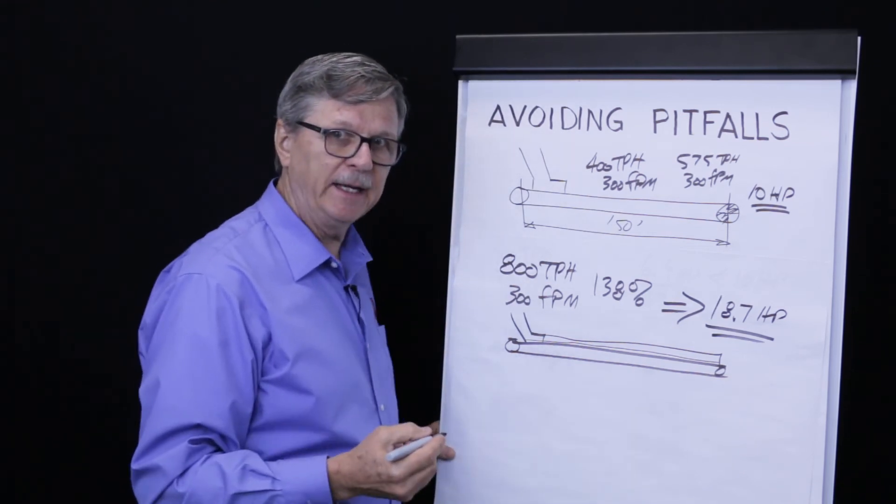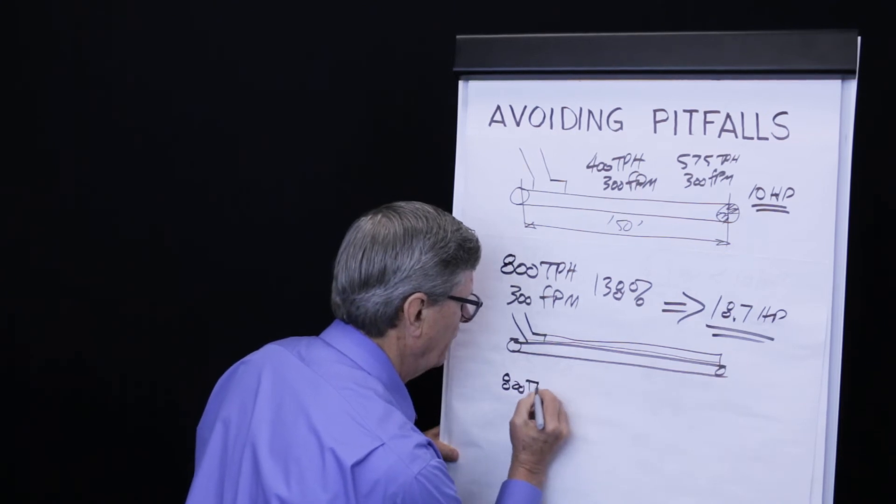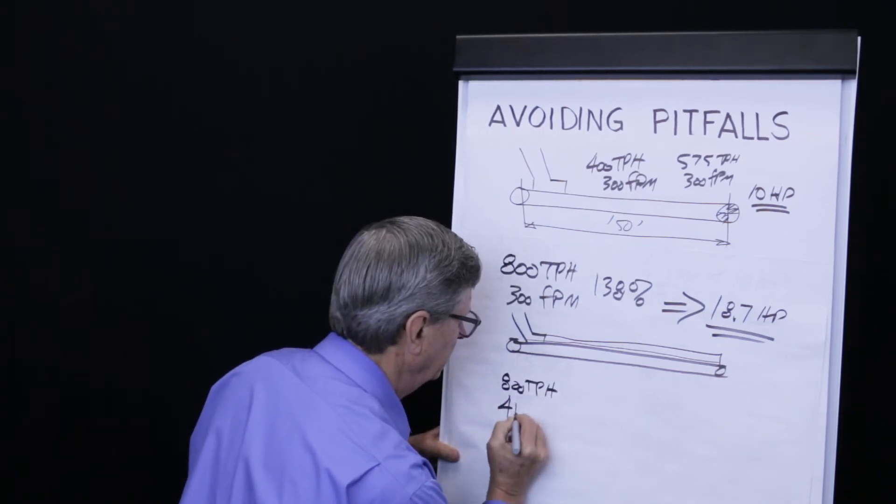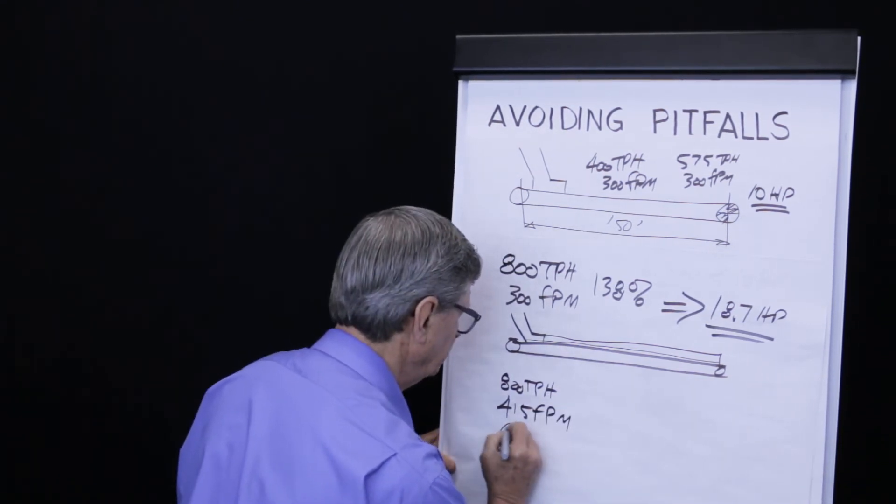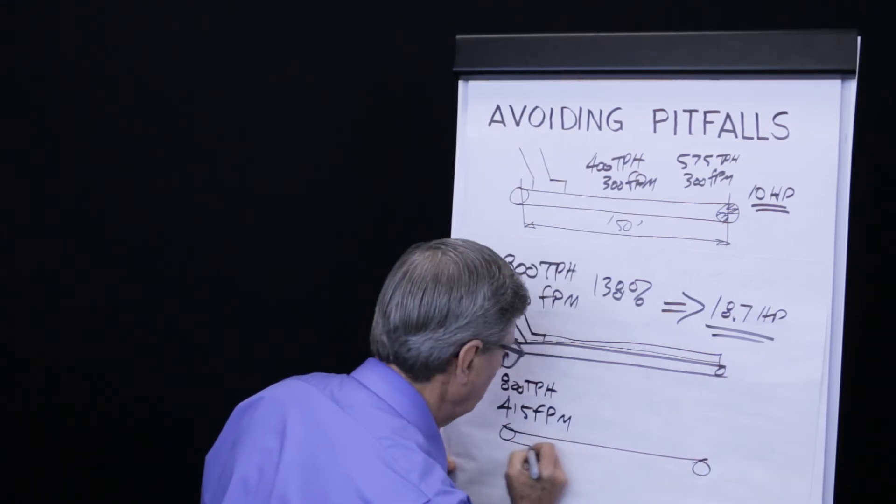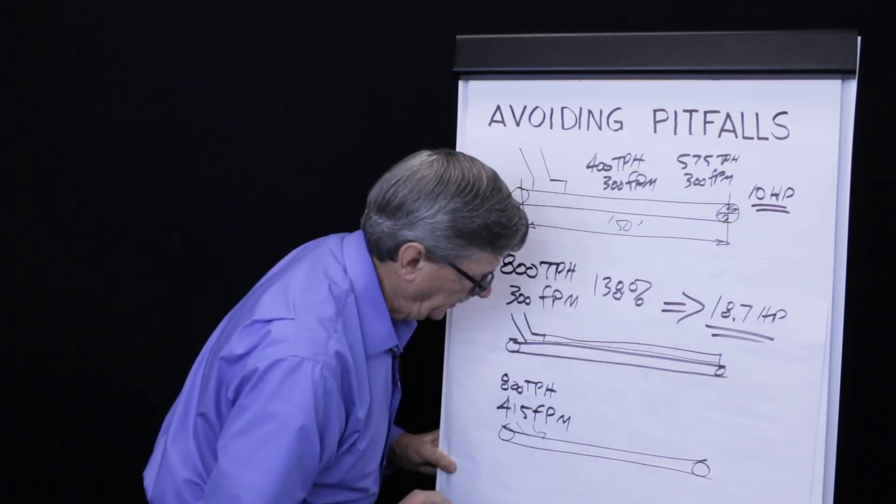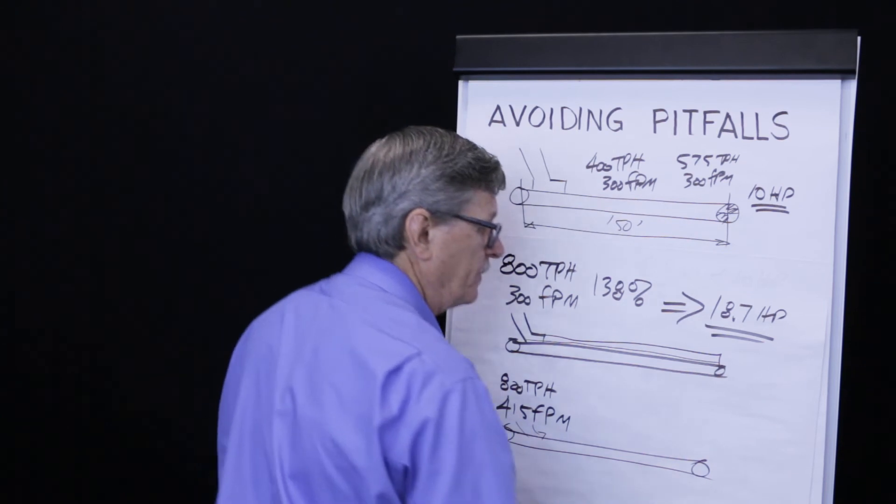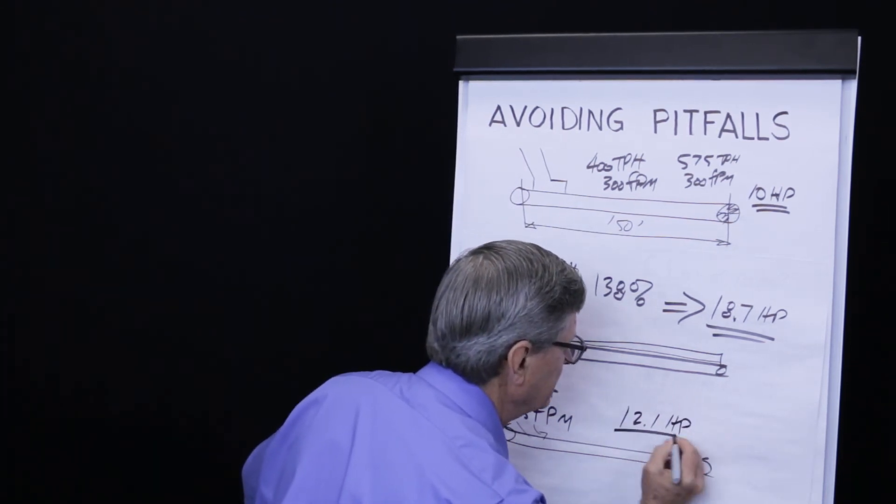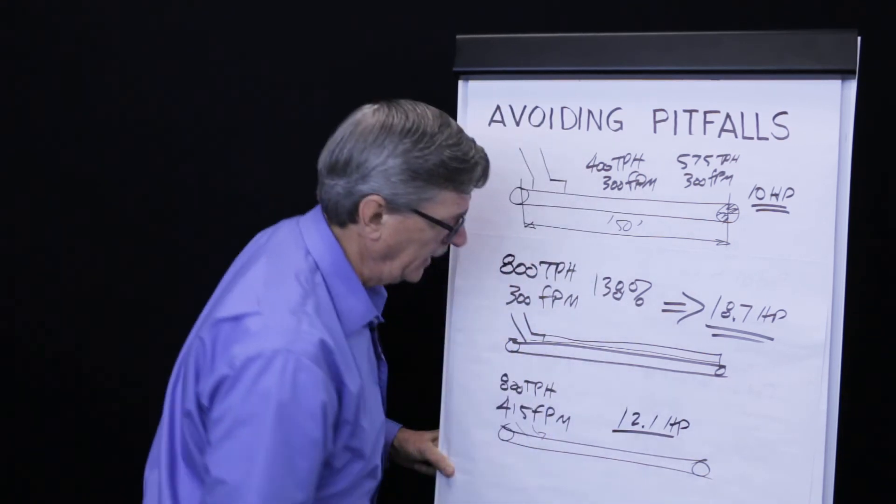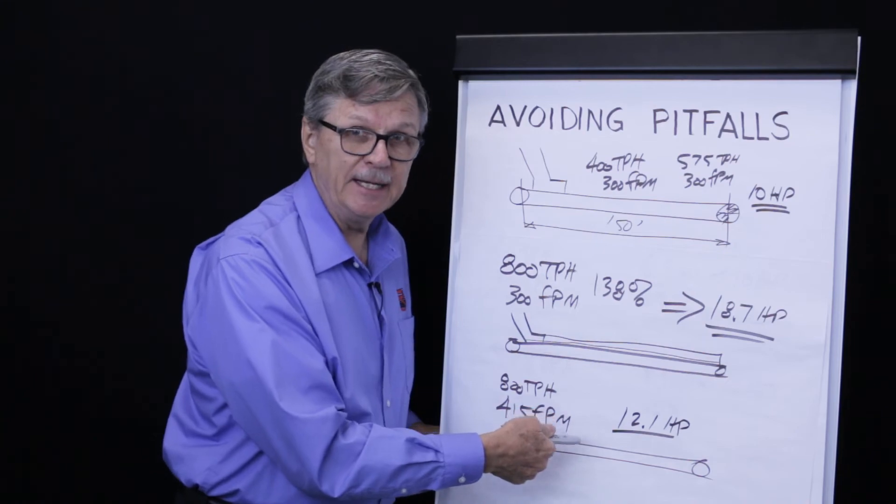Another alternative to handling 800 tons per hour would be to speed the conveyor to 415 feet per minute. We load this into our program. We keep our skirt at 12 feet long. And I'm happy to say the answer comes out to be 12.1 horsepower and a cross section which is at 100% of the CEMA recommendation.